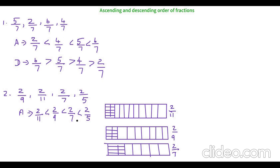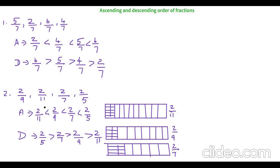So you can write this as the ascending order. The descending order will be the vice versa: 2 by 5 is greater than 2 by 7, which is greater than 2 by 9, which is greater than 2 by 11. Whenever we have the same numerator but different denominators, the number with the bigger denominator is always the smallest. You can remember this chocolate example to make it easy.